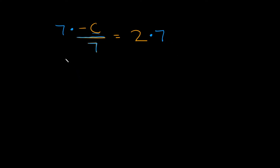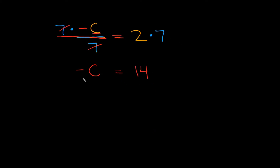Now I can start simplifying. I have a 7 on top and on the bottom of this fraction, so they cancel out and reduce down to 1. All we're left with on this side is negative c. And that's going to be equal to 2 times 7, which is 14.